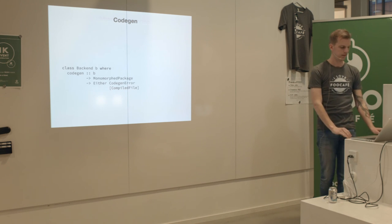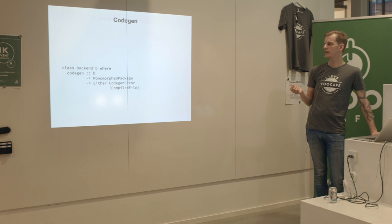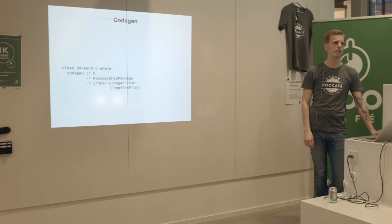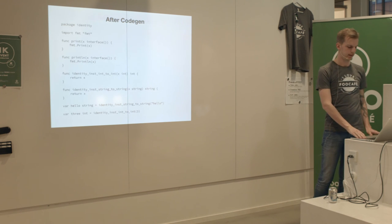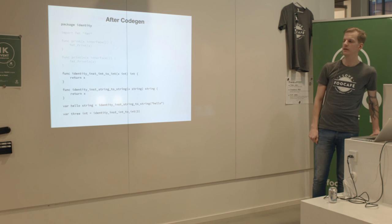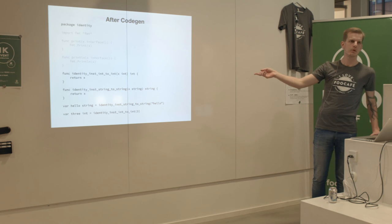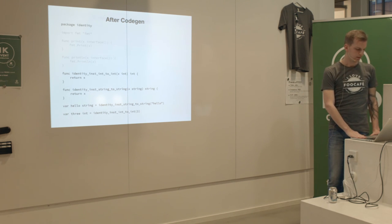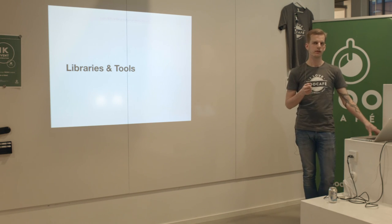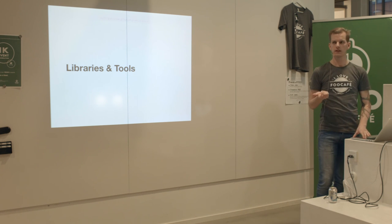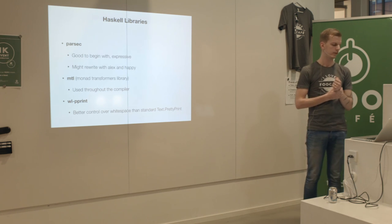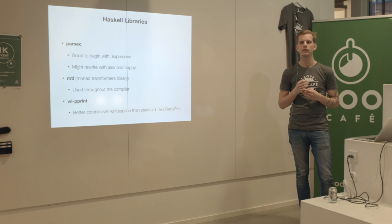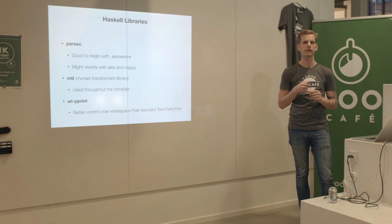The last step is code generation - taking monomorph packages and either producing an error or printing Go files. Looking at the final Go output: there's a small prelude part and then the core generated code. For the parser in Oden I've used Parsec - included in standard Haskell libraries. It's easy to create your parser and see how syntax works. There are more powerful tools if you want more control - I'm considering rewriting the parser later on.